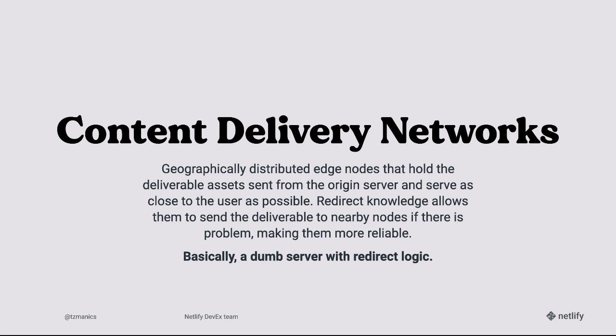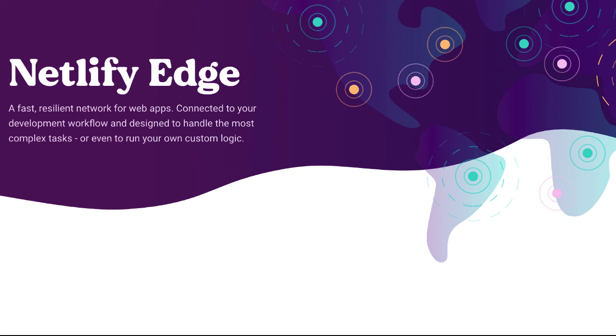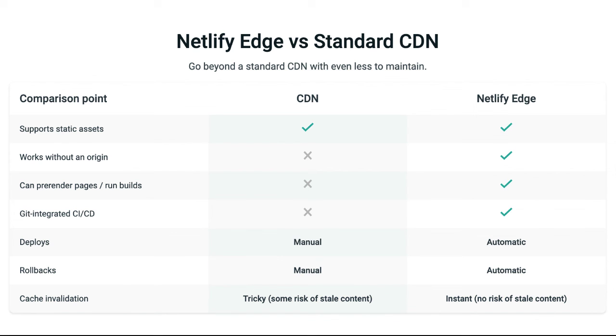CDNs, or content delivery networks, are geographically distributed edge nodes that hold deliverable assets sent from the origin server and serve them as close to the user as possible. They have redirect knowledge, which allows them to send the deliverable to nearby nodes if there's a problem, making them even more reliable — basically a dumb server with redirect knowledge. For this project, we'll be using Netlify Edge. Netlify Edge helps us get our project up to the edge nodes really fast, with hardly any setup, especially compared to traditional servers. It also has great features like Git-integrated CI/CD, automatic deploys, rollbacks, and instant cache invalidation.